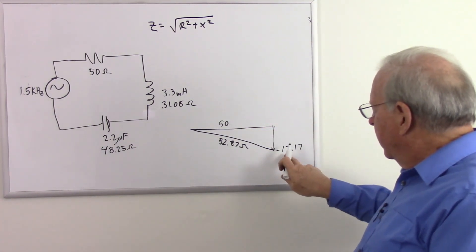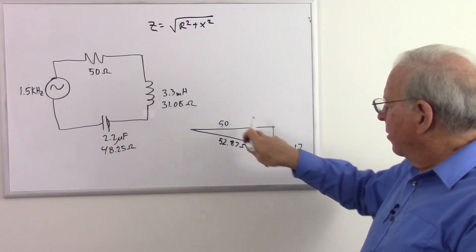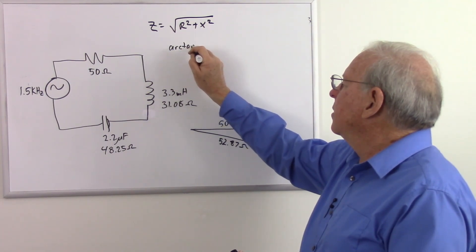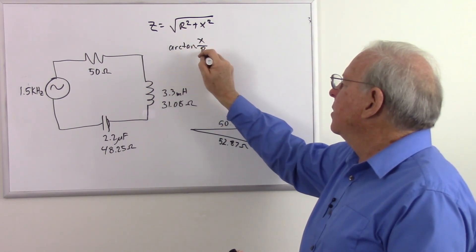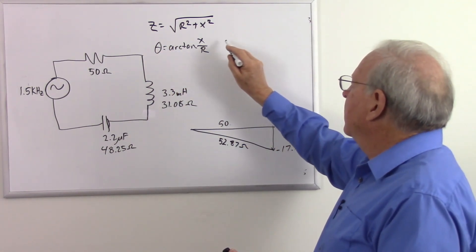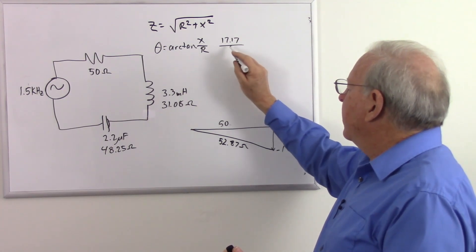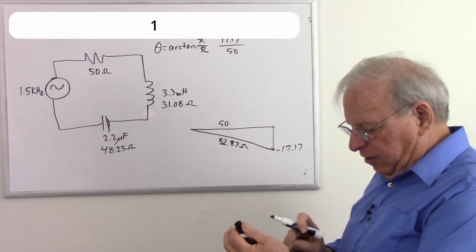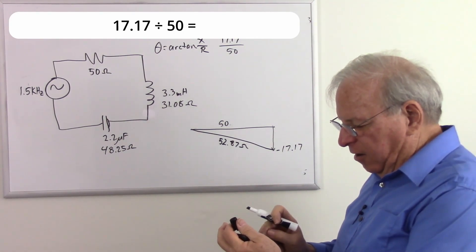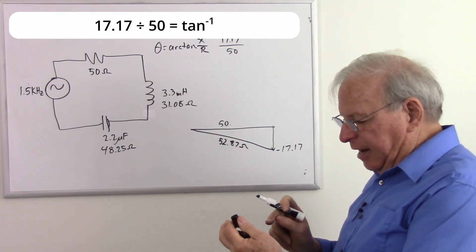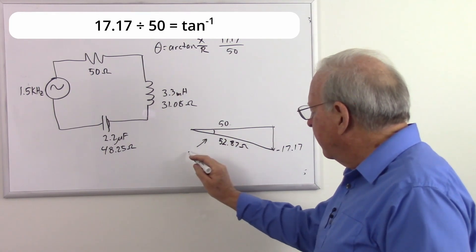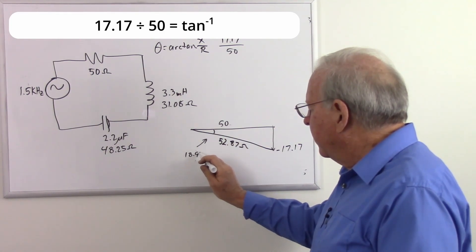What's the angle? Once again, we divide this number by that number. So divide X by R. Our phase angle equals the arctangent of X over R, which will be 17.17 divided by 50. Take the arctangent of that. So 17.17 divided by 50 equals a number that I take the arctangent of, and I got 18.95. It's kind of a small angle to write in there. 18.95 degrees. And because it's capacitive, it's a negative angle.